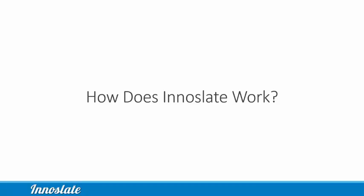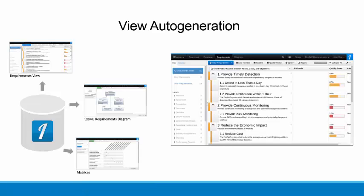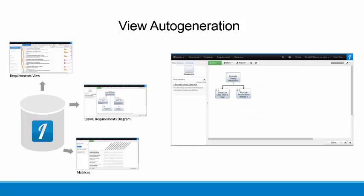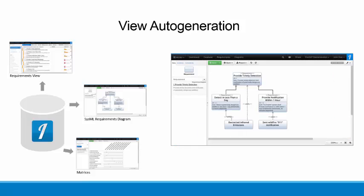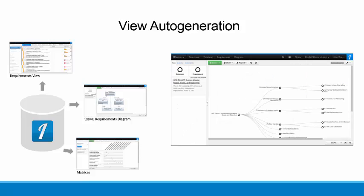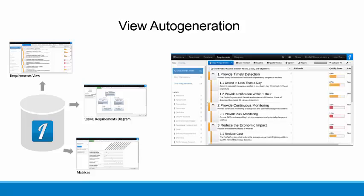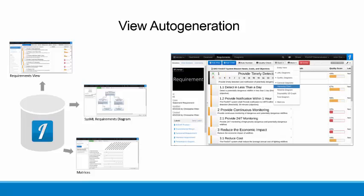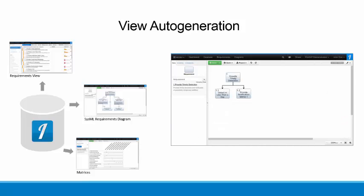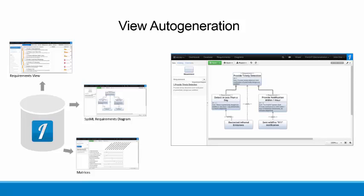Next, let's discuss how Innislate works. Each view of Innislate is building and updating a LML model in your current project's database behind the scenes, while you are creating and editing diagrams, documents, and more. Each view has access to and knows how to interpret that same model, and displays it in a different way.